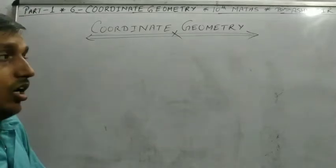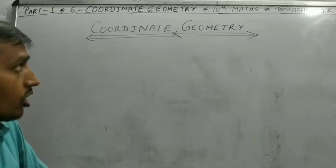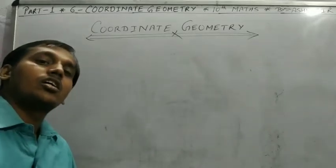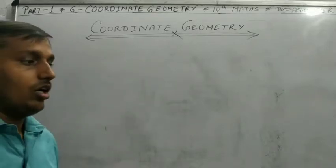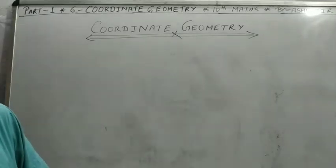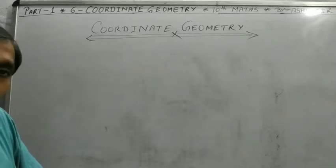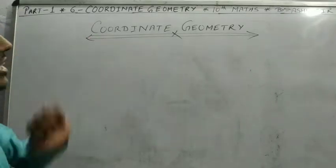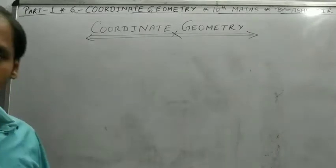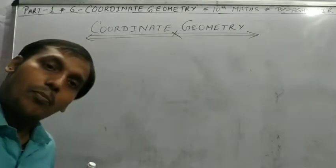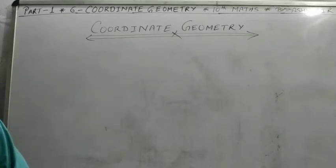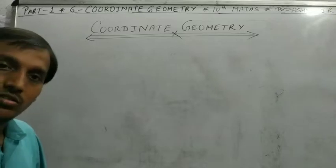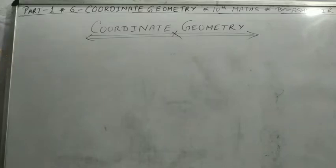Hello students, we start the next chapter: coordinate geometry. This is also a chapter studied in class 9th. Coordinate means point, geometry means any types of constructions. So coordinate geometry involves rotation of points and using points to find conditions, values, distances, areas, and locations.